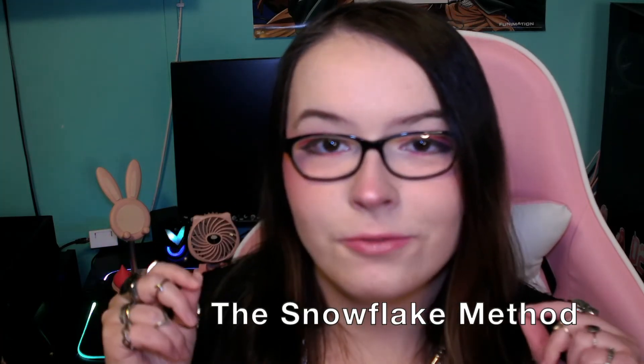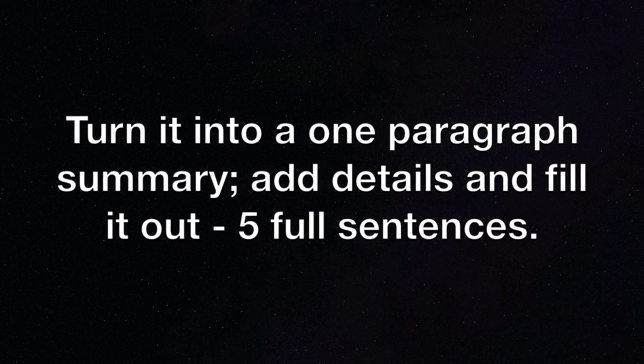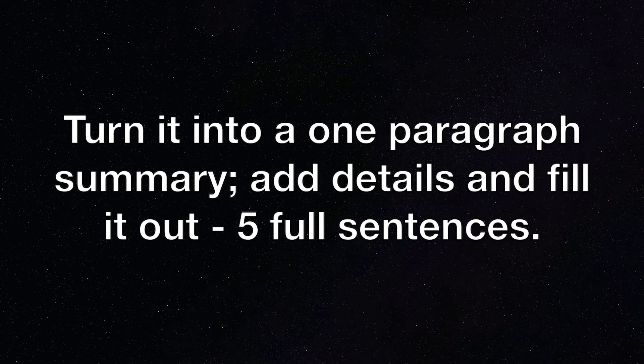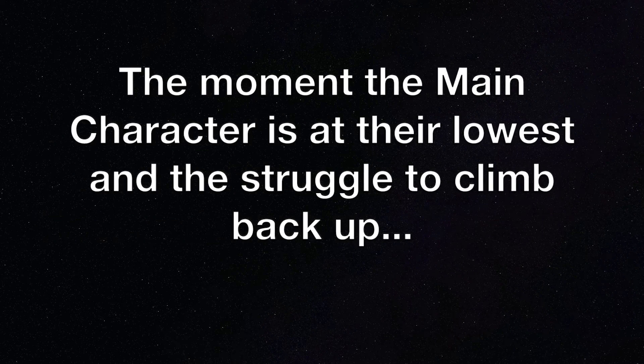The snowflake method. I actually really love this method, especially if you haven't even really started on an idea for your novel. This method allows you to build off previous steps to form your outline. It has six steps. First: write a one sentence summary — a general understanding of what your story is about and where it will go. Second: turn it into a one paragraph summary, building off from your first sentence and adding details until you have five full sentences covering the exposition and status quo, the inciting incident, the turning point, the moment your character is at their lowest in the struggle to climb back up, and the climax and resolution.